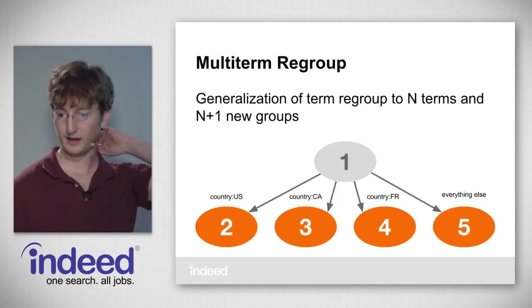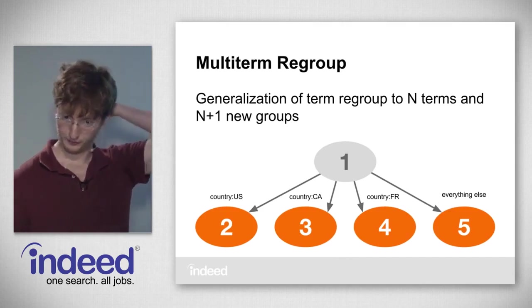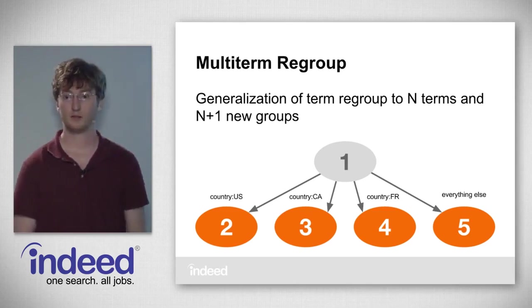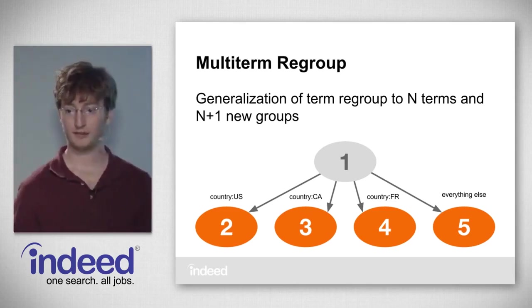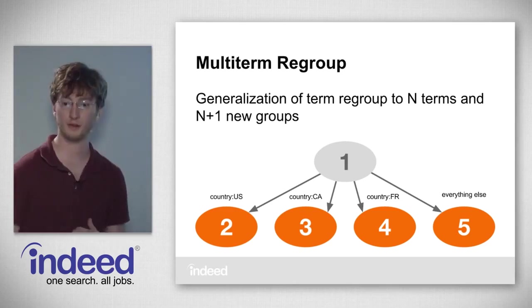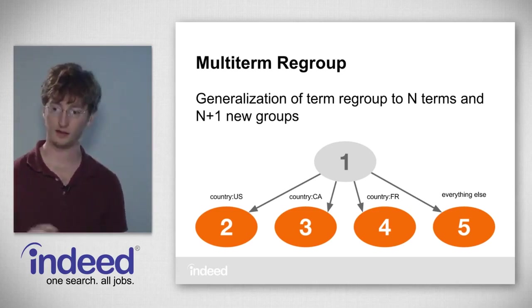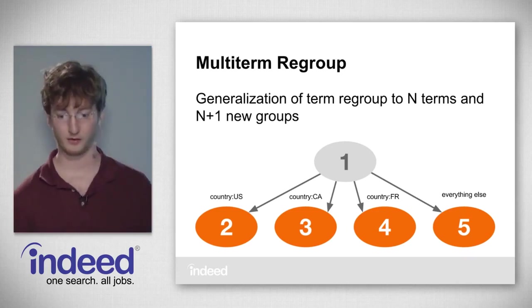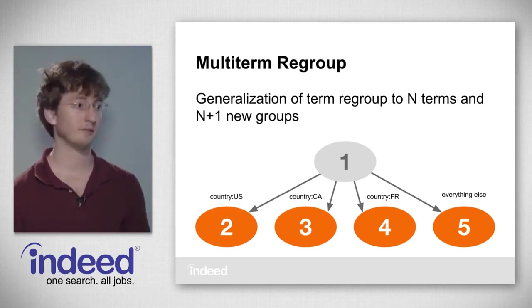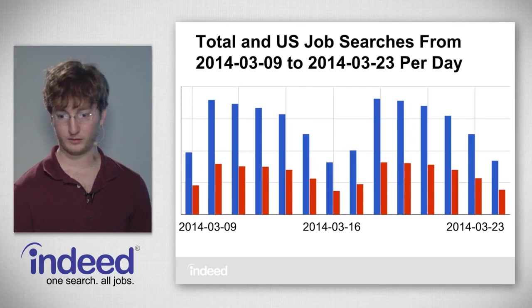Next is multi-term regroup — a generalization of term regroup to N terms and N+1 new groups. You give it N terms and get N+1 new groups. For example, with country U.S., country Canada, and country France as our three terms, there's a fourth group for everything else. If it contains country U.S. it goes to group 2, and so on. This is another very useful type of regroup.